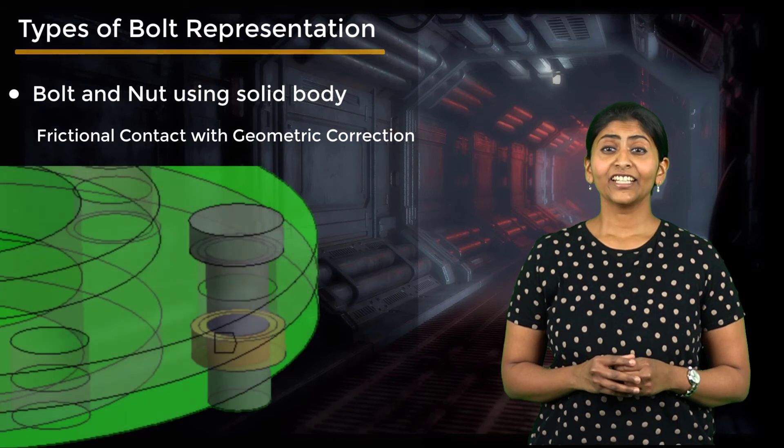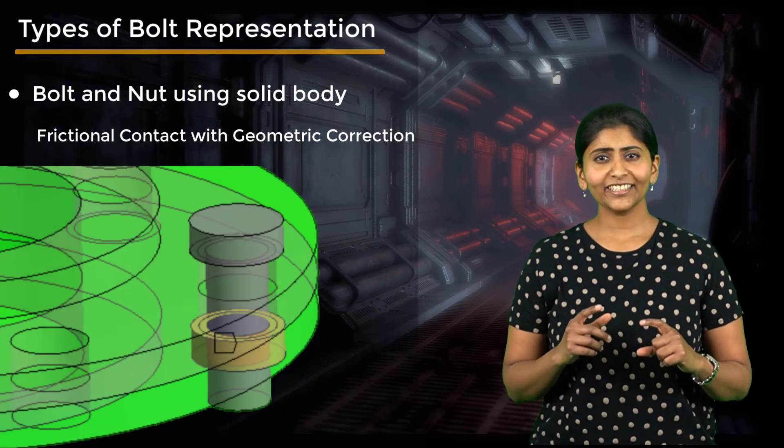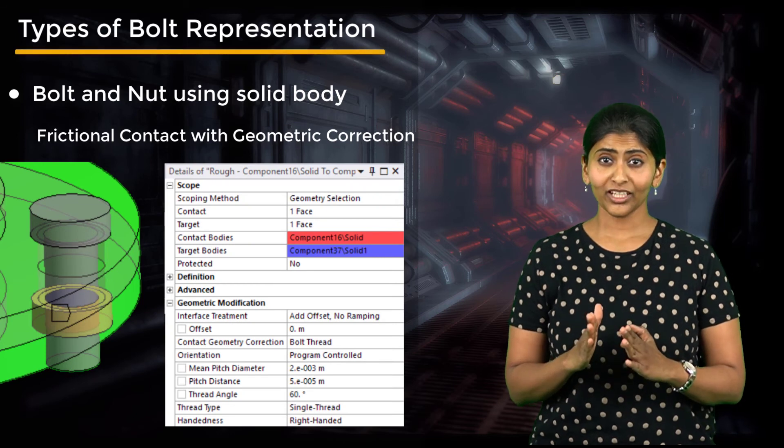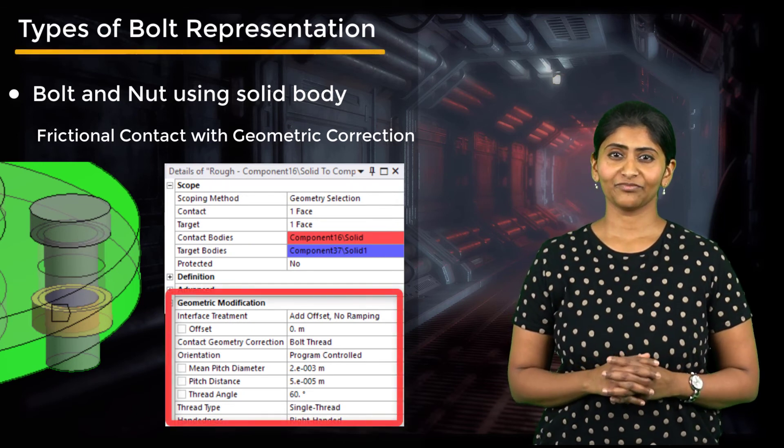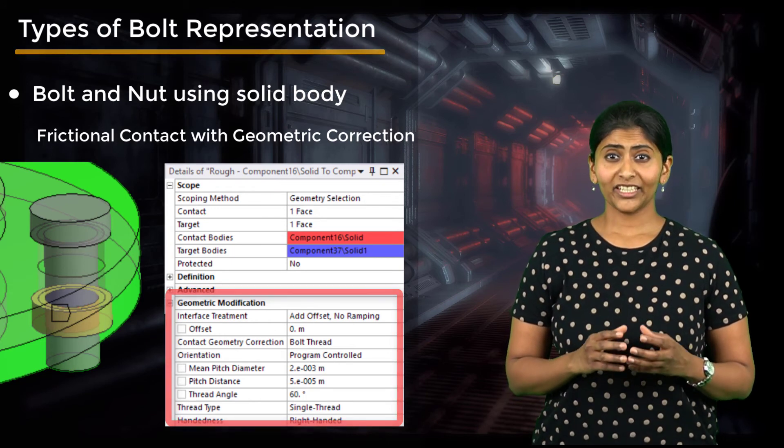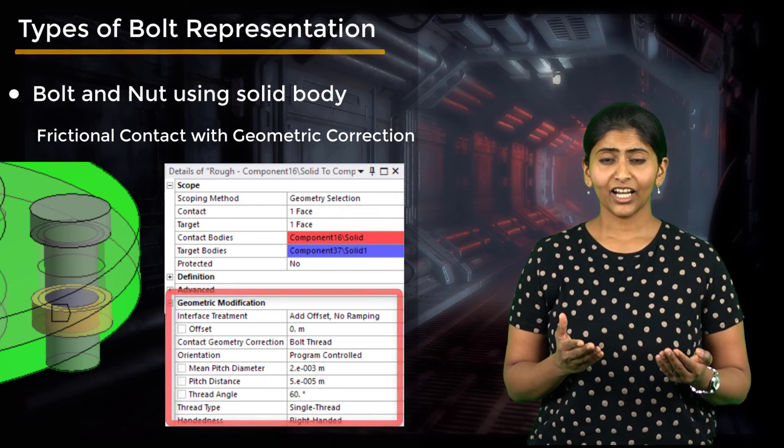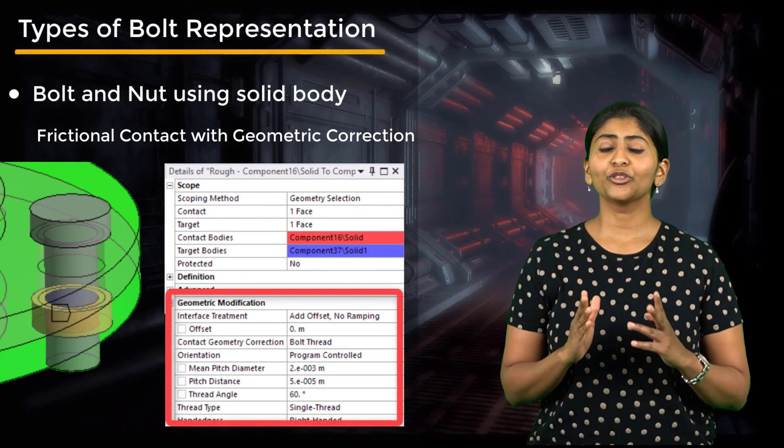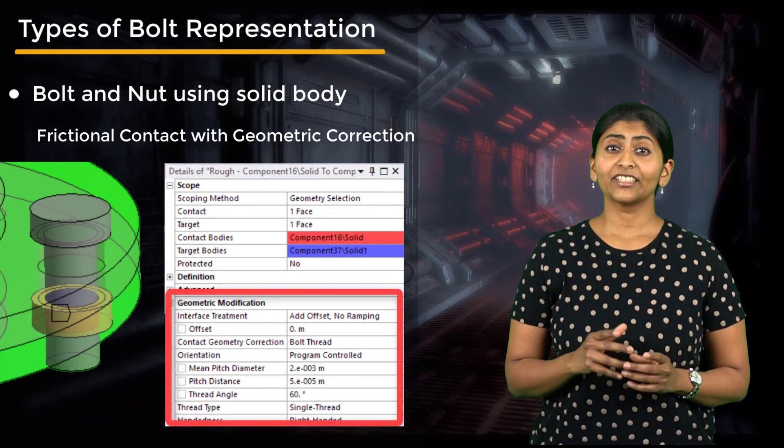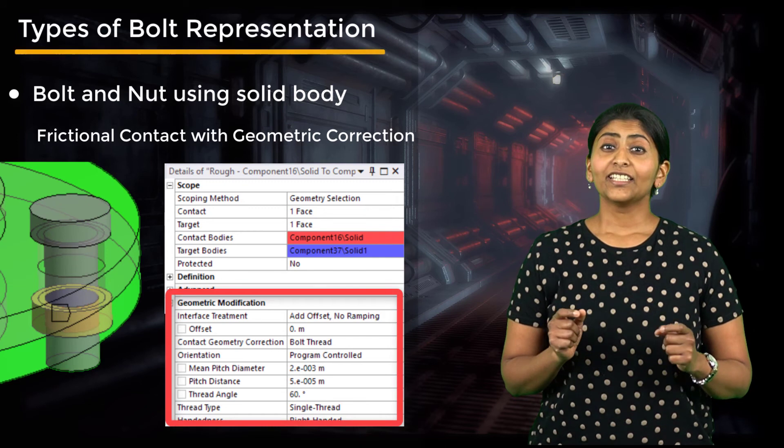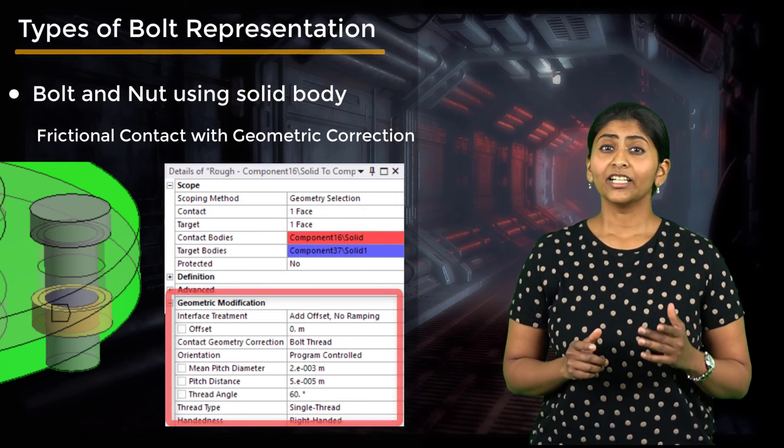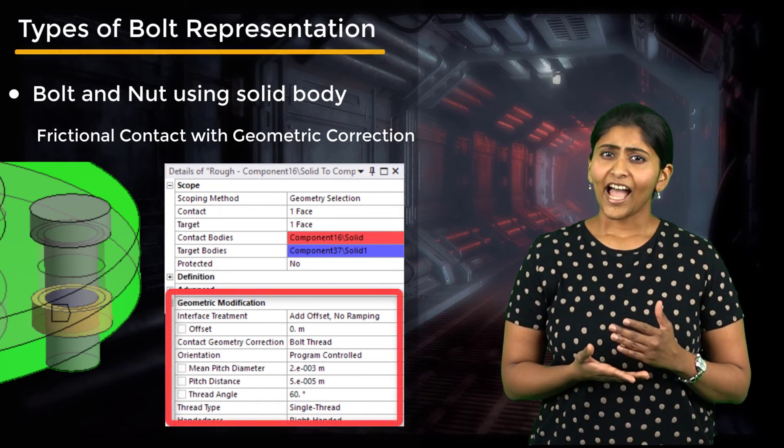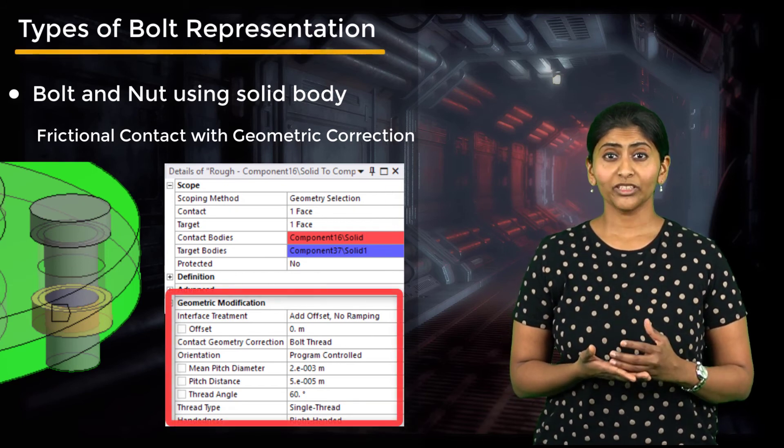In this method, the threaded portion of the bolt and the nut is again replaced with a cylinder. But instead of using bonded contact between the nut and the bolt, we use frictional contact with geometry correction. When we use geometry correction between the bolt and the nut surfaces, a correction is applied to the contact normal for these two surfaces based on user inputs. The user specifies the start and end points of the bolt axis, the mean pitch diameter of the bolt, the pitch of the bolt, the half thread angle, and the number of starts.